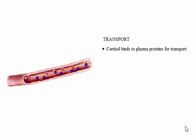The steroid hormones are lipid-soluble, and therefore bind to carrier proteins for transport through the circulatory system. The bound hormone exists in dynamic equilibrium with unbound or free hormone in the plasma. Only the free hormone is available to leave the bloodstream and act on target cells.